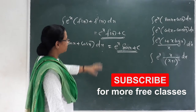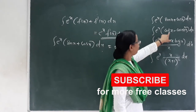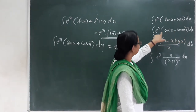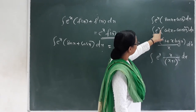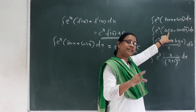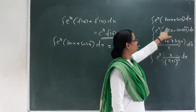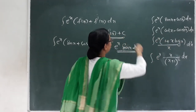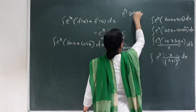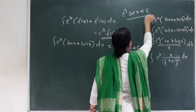Next question: ∫e^x · (cot x − csc²x) dx. Here, cot x is the function and −csc²x is its derivative. So we apply the formula f(x) + f'(x), and the answer is e raised to x · cot x + C.